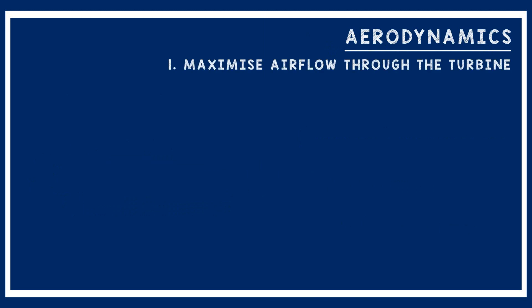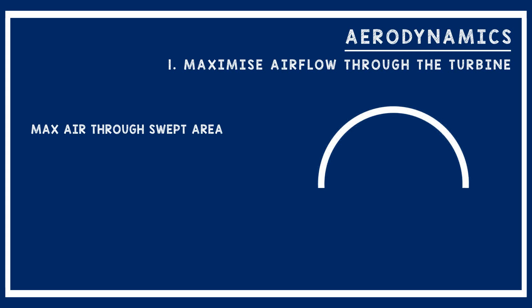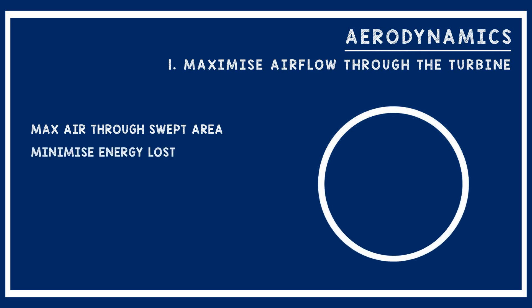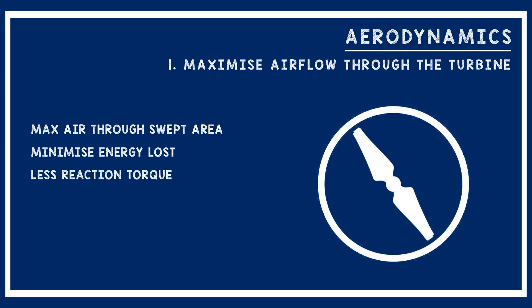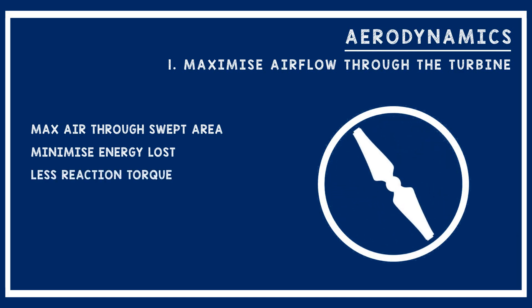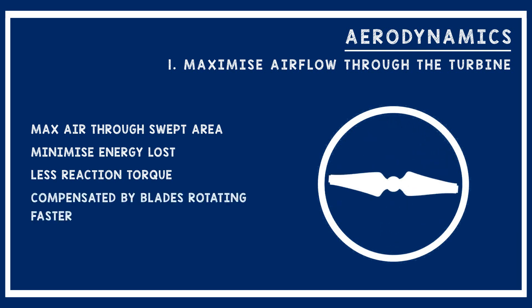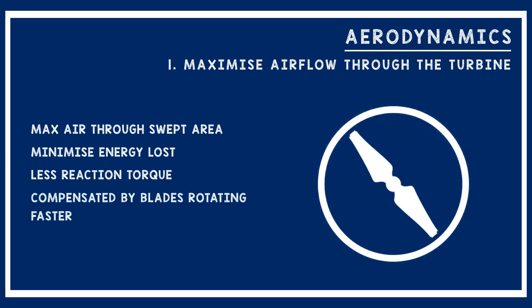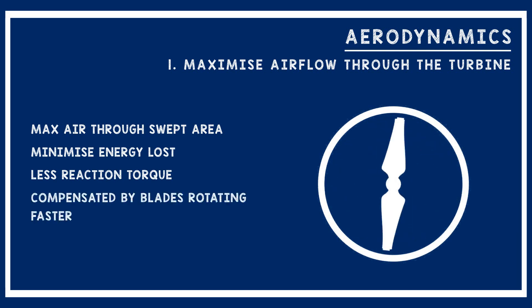In order to maximize the power extracted from the turbine, we want to maximize the aerodynamic performance. First, we want to maximize the airflow through the turbine — forcing as much air through the swept area as possible while minimizing the energy loss in the wake. This means imparting less reaction torque on the wake, achieved by reducing the torque produced by the turbine, compensated for by the blades rotating faster at a higher angular velocity.